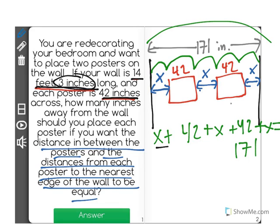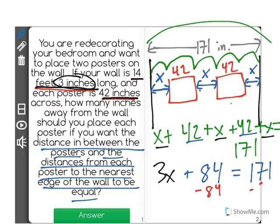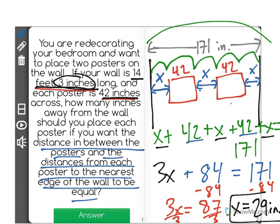Now I'm going to combine my like terms. I have 3x plus 42 plus 42 is 84 to equal 171. I'm going to isolate x by first subtracting 84 from both sides to find out that 3x is equal to 87. And then I'm going to divide both sides by 3 to find out our answer that x will be 29 inches away from the wall for the correct response.